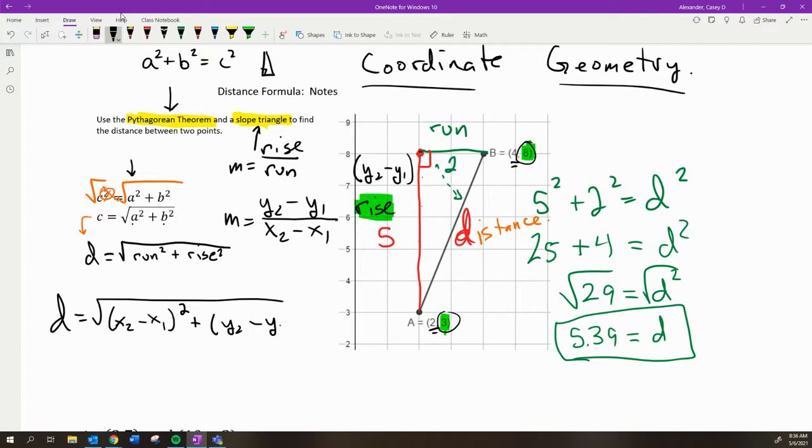So this is the distance formula, this thing that I just wrote here. And you want to write that down, please, because we're going to keep coming back to that. But really, it is just the Pythagorean theorem. And it uses the slope of the line to calculate the a and the b.